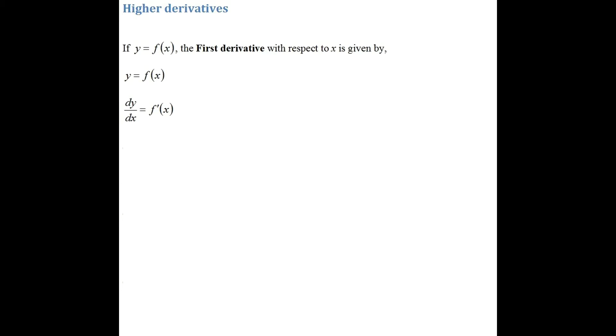Hi, in this video I'm going to show you how to calculate higher derivatives. In the last video we found the first derivative. So if y equals f of x, the first derivative is given by f prime of x, which is the same as writing the gradient function dy over dx. Generally, prime means d by dx. If you do engineering or mechanics, we also have a dot notation, where dot means differentiated with respect to t.